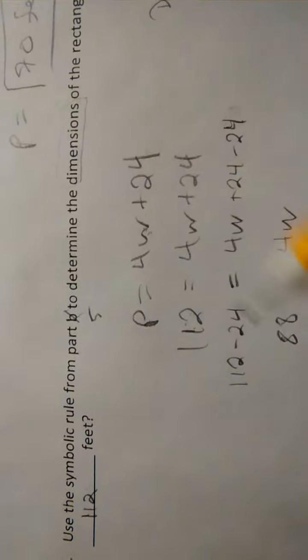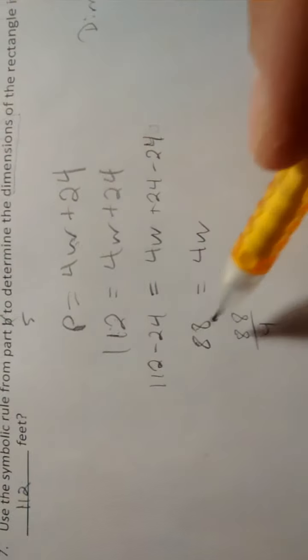So that undoes that, giving me 4W equals 88. So W must be the division of those two, or 22 feet.